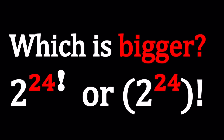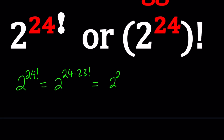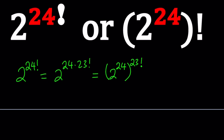I'm going to start with the first number, 2 to the power 24 factorial. Since 24 factorial can be written as 24 times 23 factorial, I can write this as 2 to the power 24, to the power 23 factorial. That follows from the exponent property. Now let's take a look at the second number.